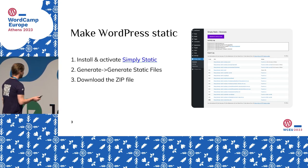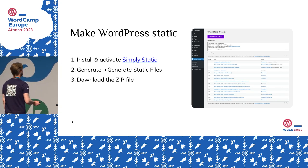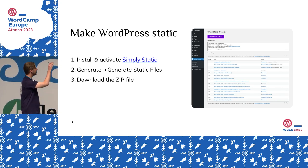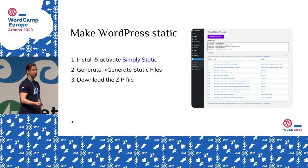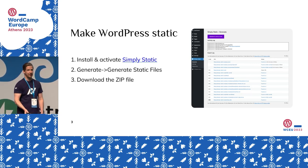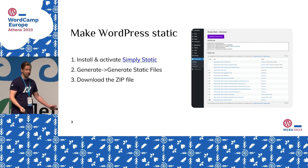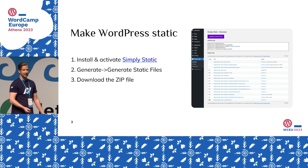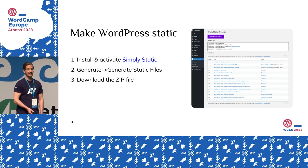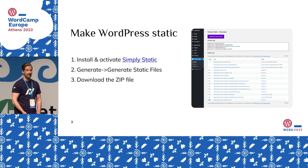I built this little plugin called Simply Static — you can see a screenshot on the right-hand side of the screen. The generation process is pretty straightforward. You can install it for free from the WordPress plugin repository, activate it, go to Simply Static, and there's a big purple button labeled 'Generate Static Files' that you can click, and the process starts running.